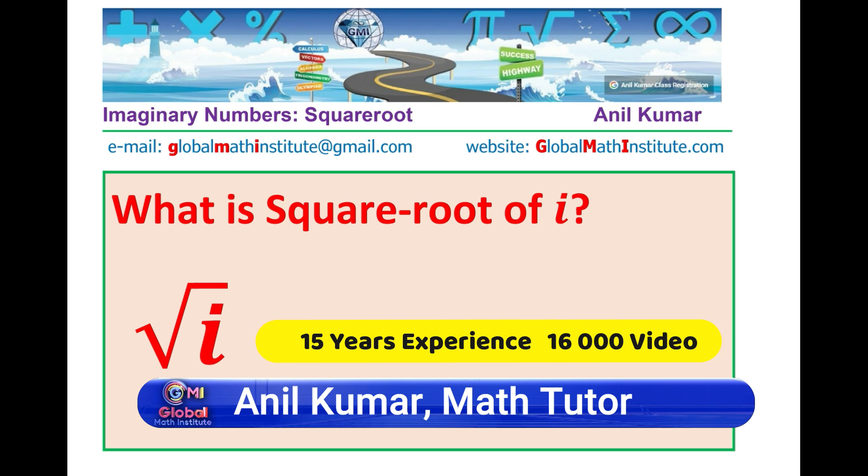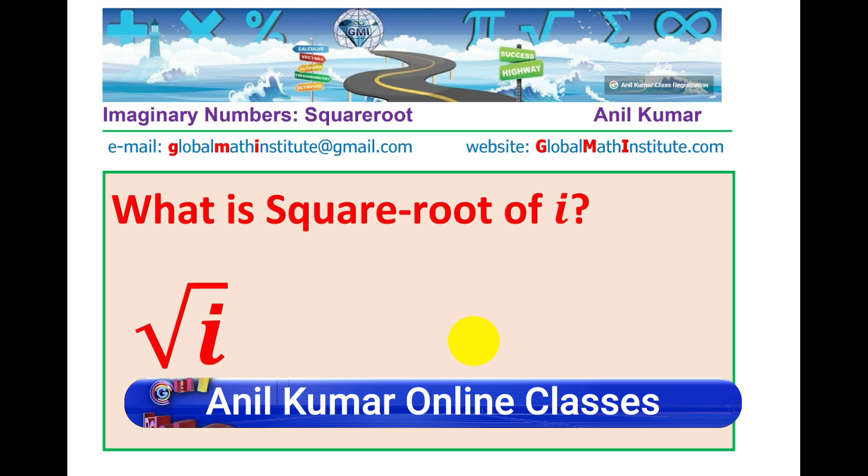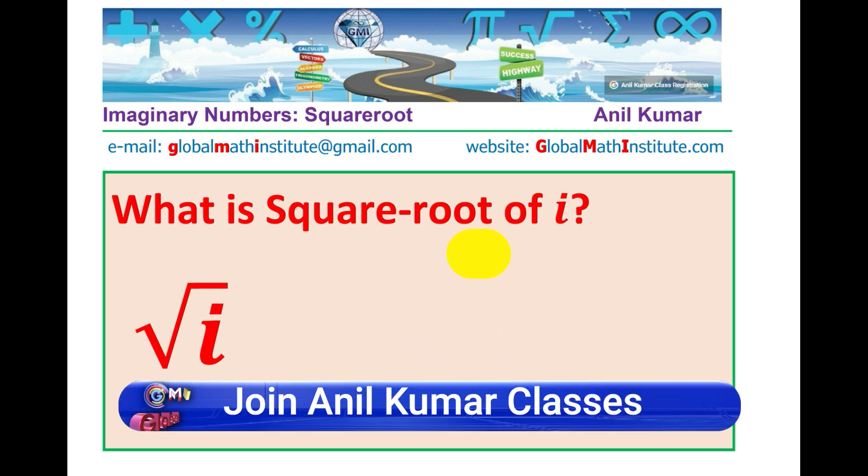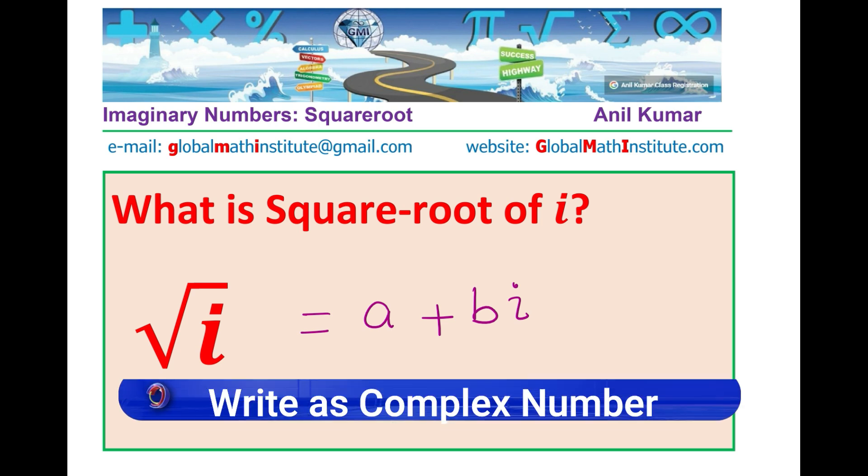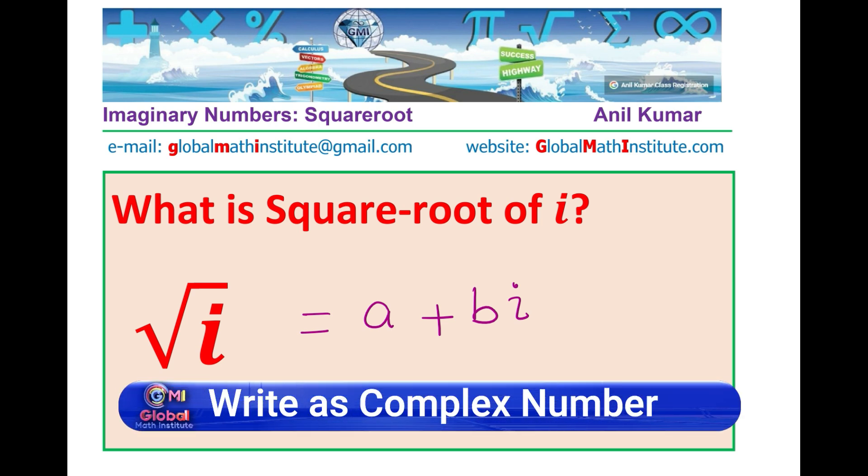In this video, we will discuss what is square root of i? Very interesting question seen in test papers and sometimes you may find it difficult to answer. So how do we figure out? Well, square root of i should be a complex number. So, let us assume that square root of i is equal to a plus bi, where a is the real part and b is a coefficient of imaginary part.